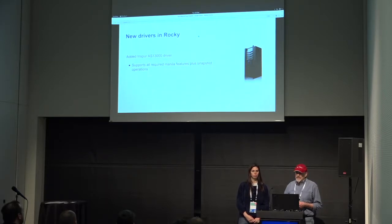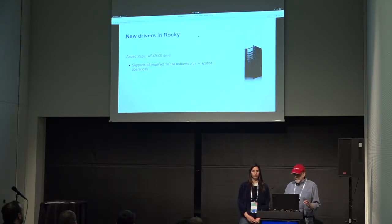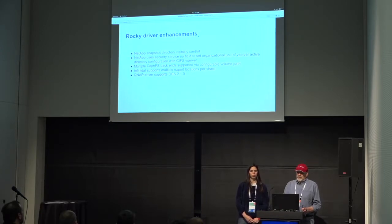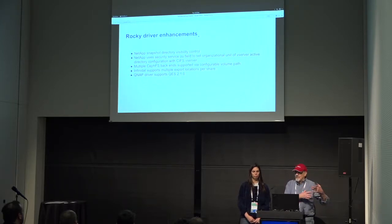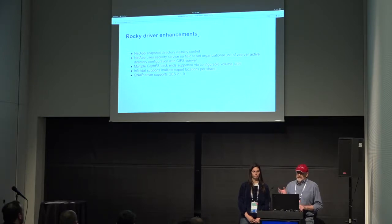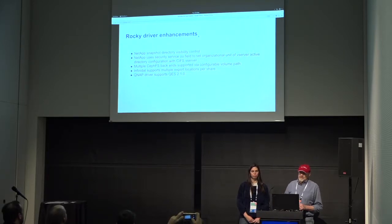The Nspur AS13000 folks added a backend — so we talked about 30 different drivers, and we got another one in this release. Other drivers basically said they had new bells and whistles to add. NetApp has snapshots show up as a .snapshot type directory; sometimes you want them visible, sometimes you don't. They can now control that with a configuration option or with a share type that says created with visible or not visible.